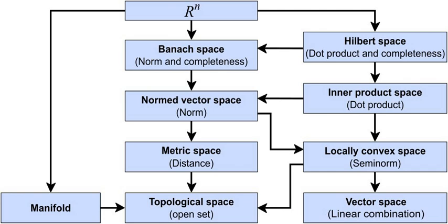Two linear spaces over the same field are isomorphic if and only if they are of the same dimension. An n-dimensional complex linear space is also a 2n-dimensional real linear space. Topological spaces are of analytic nature. Open sets, given in a topological space by definition, lead to such notions as continuous functions, paths, maps, convergent sequences, limits, interior, boundary, and exterior. However, uniform continuity, bounded sets, Cauchy sequences, differentiable functions and maps remain undefined. Isomorphisms between topological spaces are traditionally called homeomorphisms; these are one-to-one correspondences continuous in both directions. The open interval is homeomorphic to the whole real line but not homeomorphic to the closed interval, nor to a circle. The surface of a cube is homeomorphic to a sphere but not homeomorphic to a torus.